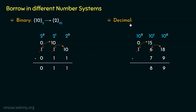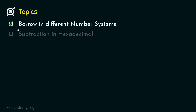In case of decimal, we are borrowing 10. In case of binary, we were also borrowing 10, but the decimal equivalent was 2. On the other hand, in decimal, the borrow's value is 10 in decimal. So in binary, whenever borrowing, we borrow 10 which means 2 in decimal. In decimal, the borrow is 10. That's the concept of borrow in different number systems like binary and decimal.